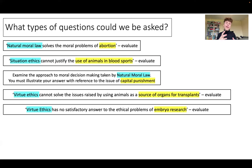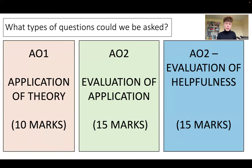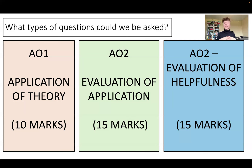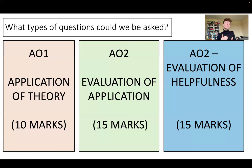There are three types of questions that come up in ethics applications. The first is an AO1 application question, where you identify two or three components of the ethical theory and apply them to the moral issue. The second is an AO2 question asking you to evaluate the application — not just stating what the ethical theory would say, but making an overall judgment about whether natural moral law can justify abortion, or whether virtue ethics would permit euthanasia. With 15-mark questions, we need critical analysis and a judgment.